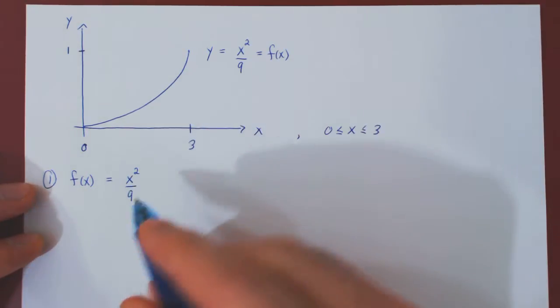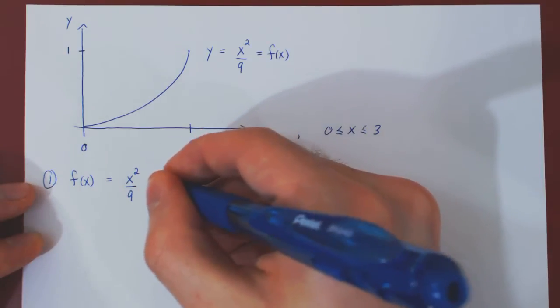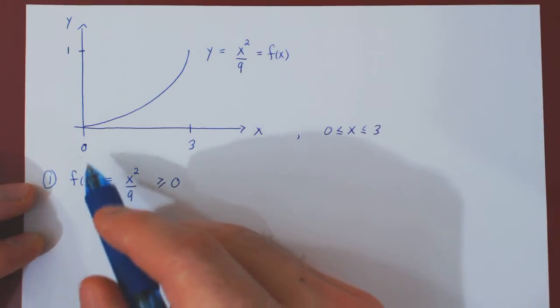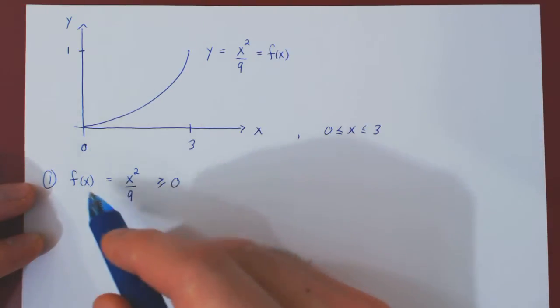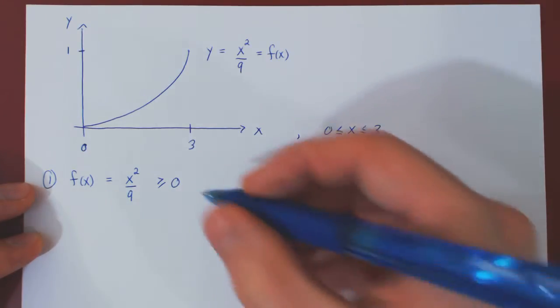Well, as we have x squared over 9, x squared can never be negative. Clearly, the first condition is satisfied. The function is always non-negative, actually for all x values, but of course also on 0 to 3.